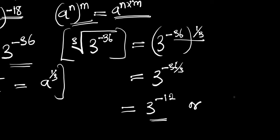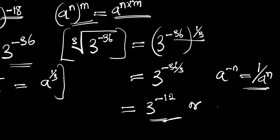Recall that if you have a to the power of negative n, this equals 1 divided by a to the power of n. So 3 to the power of negative 12 can also be written as 1 divided by 3 to the power of 12, and this becomes the final answer. That is for this particular problem and that is for the video — thank you and goodbye.